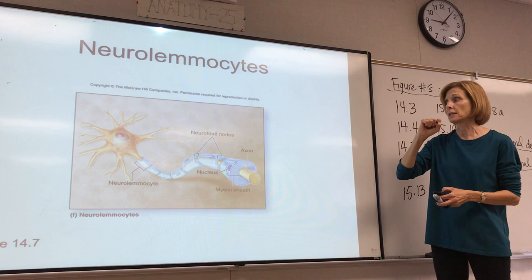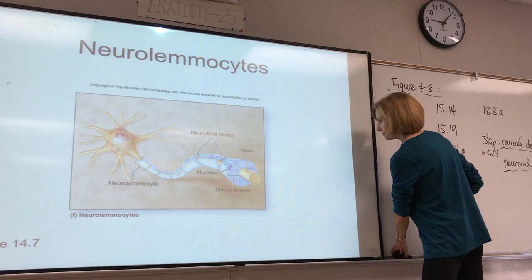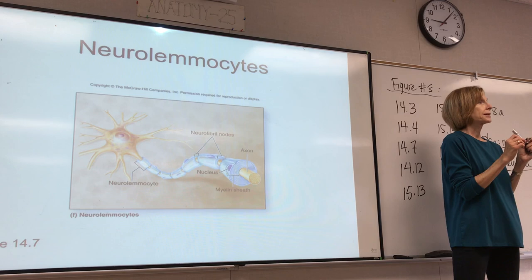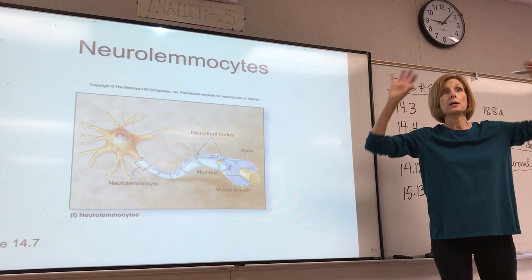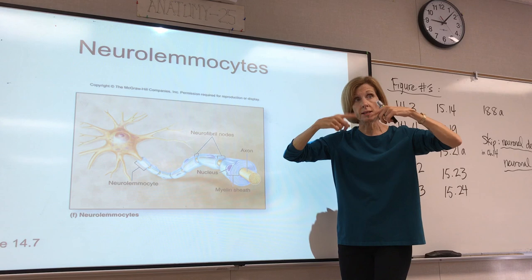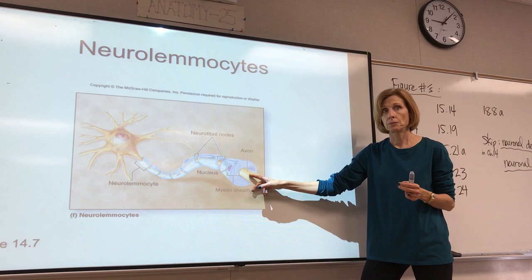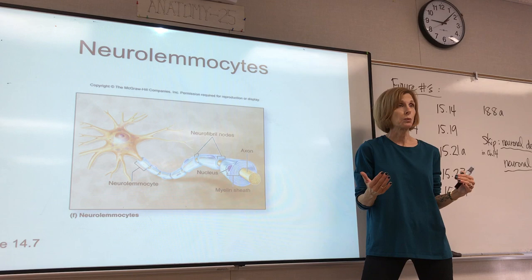This is what the myelin sheath looks like — kind of like hot dog buns wrapped around the axon. This axon is a myelinated axon. In the CNS, an oligodendrocyte has processes that reach out and wrap around the axons. But notice these Schwann cells look different — each Schwann cell wraps itself around the axon. This is one Schwann cell, this is another, and so on. But the myelin sheath looks basically the same; it's just that the cells go about it in a different way.